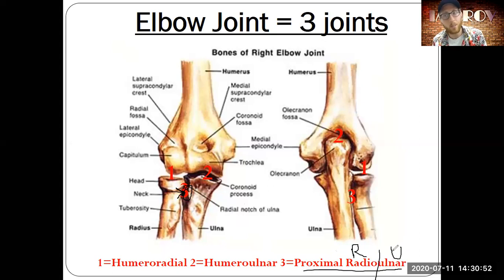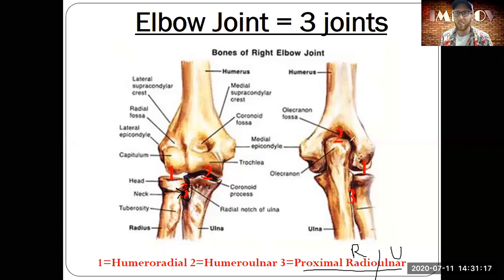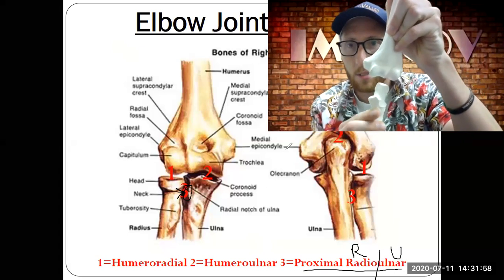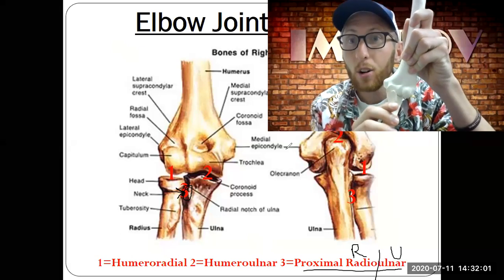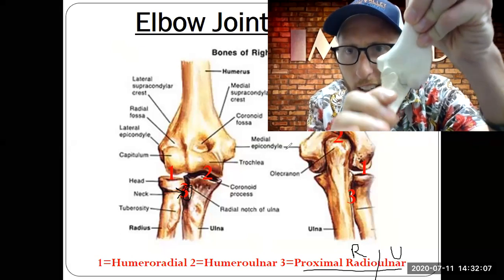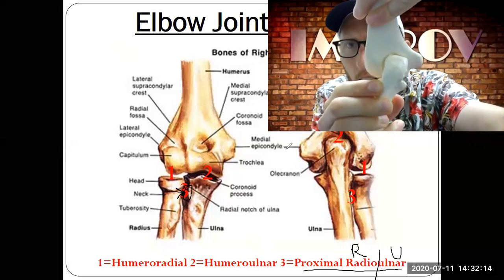The word proximal is important because there's also a distal radial ulnar joint. The elbow actually has three joints. Bringing in the funny bone: the humeral ulnar joint is where the ulna comes in and latches right on top of the trochlea. It's a hinge joint with a nice groove where the ulnar arch and the olecranon in the back lock in place.